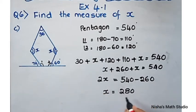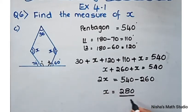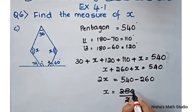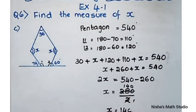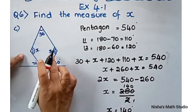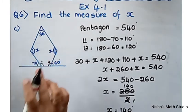Shifting the 2 to the other side — from multiplication it changes to division — so x equals 280 divided by 2, which gives x equals 140 degrees. So if one x is 140, the other is also 140.